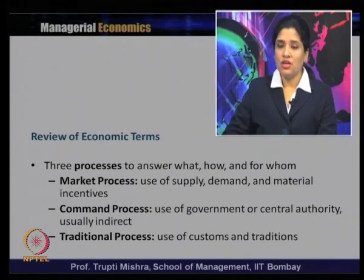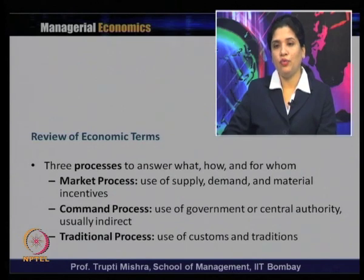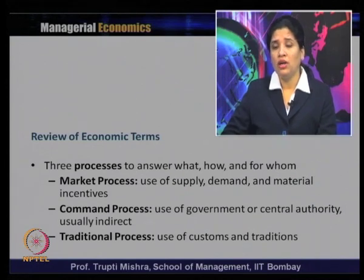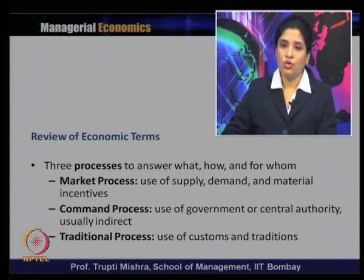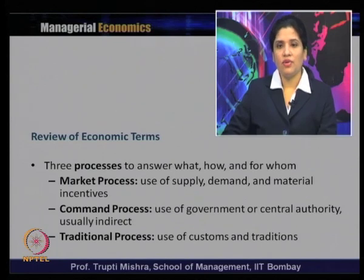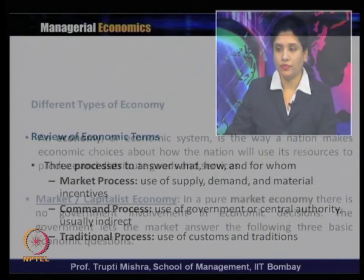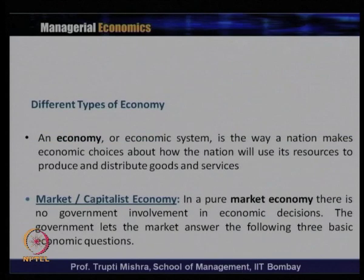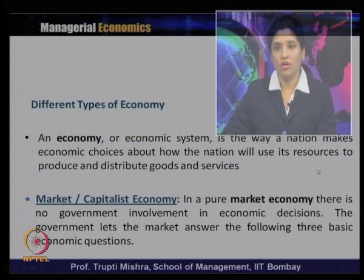There are three processes to answer what, how, and for whom. In the market process, supply and demand forces and material incentives are used. In the command process, government or a central authority makes the decisions. In the traditional process, custom and tradition decide. Based on these three processes, we can define different types of economy. An economy is the economic system — the way a nation makes economic choices about how to use resources to produce and distribute goods and services.